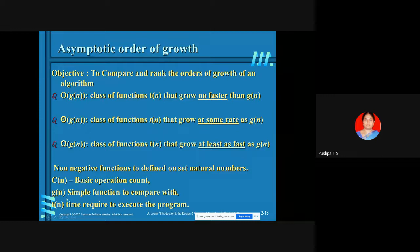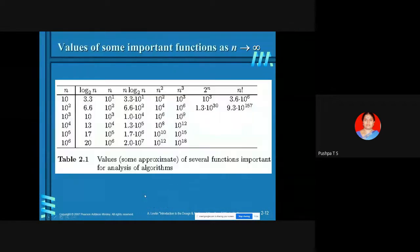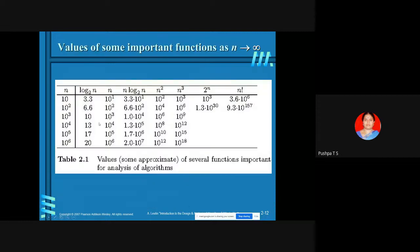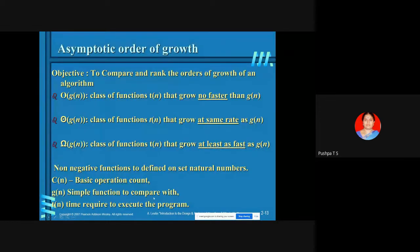We use three functions here. C(N) gives the count of the basic operation. G(N) is a simple function — it can be any one of the standard efficiency classes — and is used as the standard for comparison. T(N) is the actual count: when you execute a program, you count how many times the basic operation is performed. Based on that exact count, you decide which efficiency class the algorithm belongs to — whether it is log N, N, N log N, N squared, and so on.